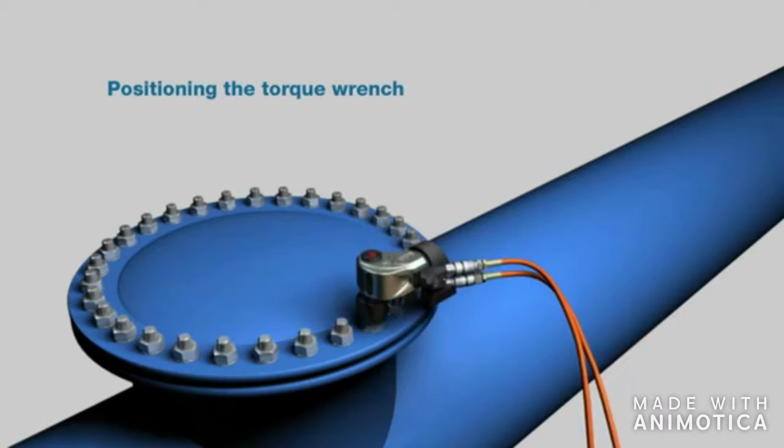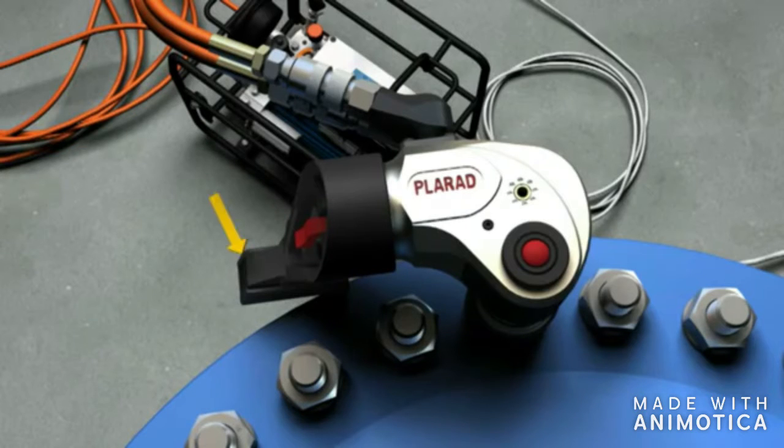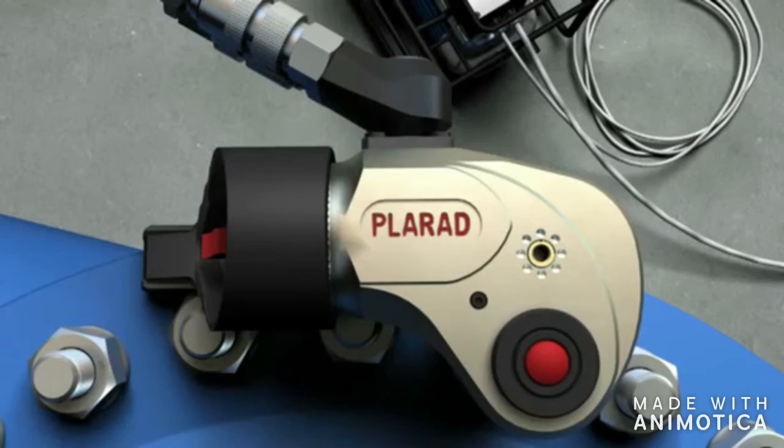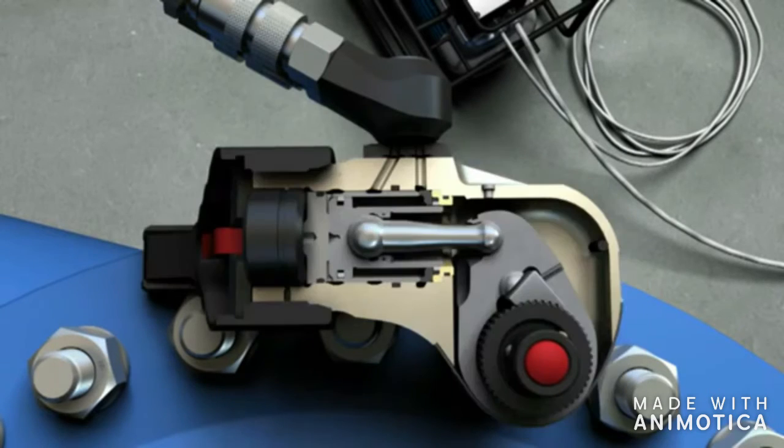Place the torque wrench on the top of the bolting position. Make sure the reaction arm is properly set. Let's take a closer look at the MX EC.